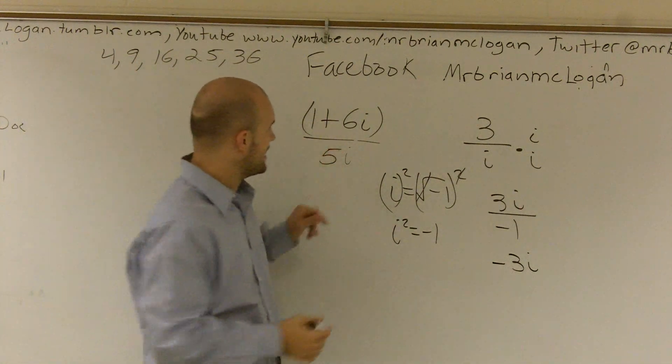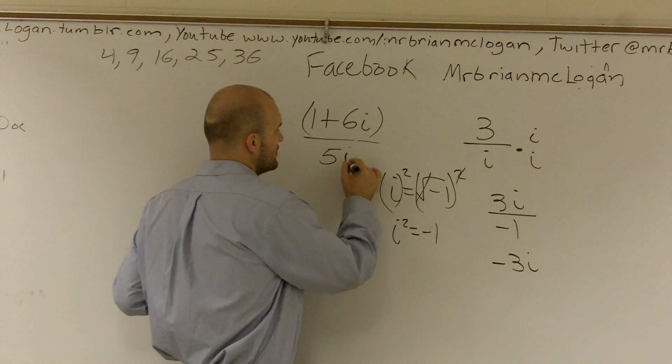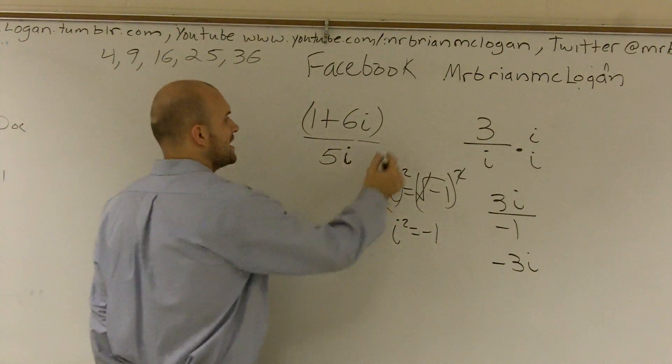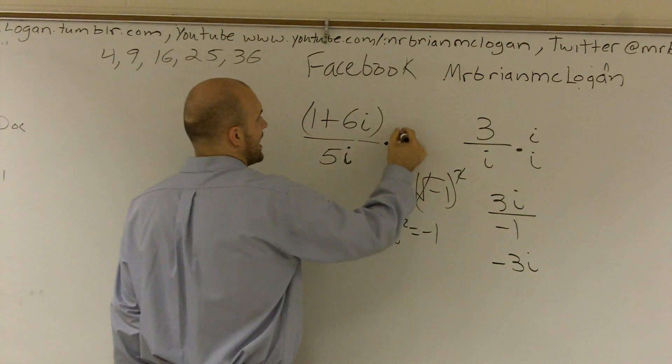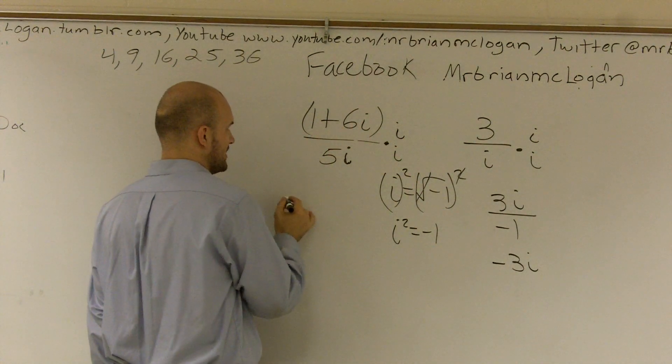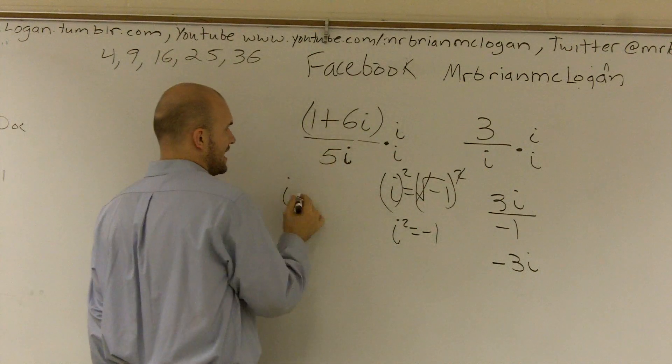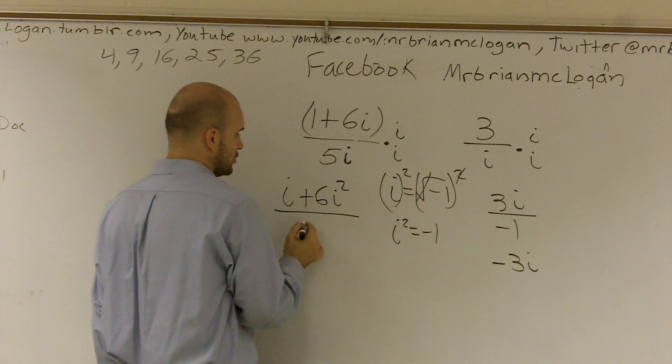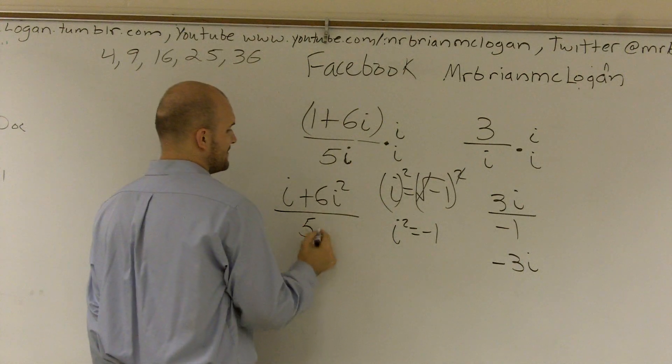Over here, I just don't have an i. I have a 5i. But that's okay. All we need to do is get rid of the i. So again, I'm going to multiply by i over i. And here, I have to use my distributive property. So I'll be left with i times 1 is i plus 6i squared all over 5i squared.